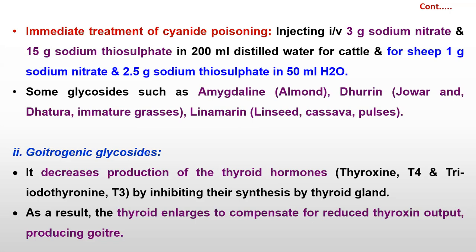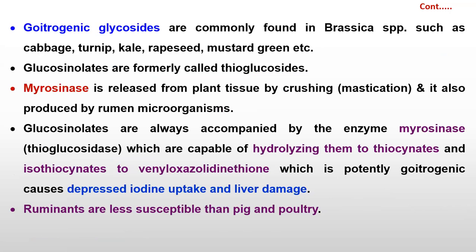Now coming to goitrogenic glycosides. Goitrogen — the name itself denotes production of goiter. It decreases the production of thyroid hormones like thyroxine (T4) and triiodothyronine by inhibiting their synthesis by the thyroid gland. They reduce the activity of the thyroid gland, and by that way the production of thyroid hormone is affected, which results in thyroid enlargement to compensate for reduced thyroxine hormone, and that is why enlargement of the thyroid gland takes place and goiter is produced.